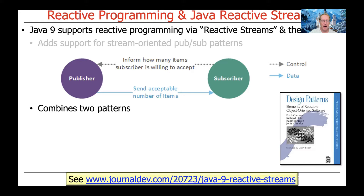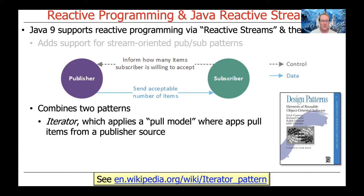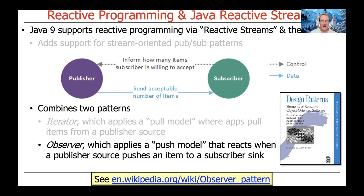One of the patterns from the Gang of Four book is the iterator pattern, which applies a pull model. The subscriber will go ahead and indicate how many items they want the publisher to send them — five items, ten items, twenty items, or whatnot. That's the iterator pattern — it's a pull-based model. And then from the other point of view, we have the observer pattern, which is more of a push model used to have publishers push items to the subscriber or subscribers.